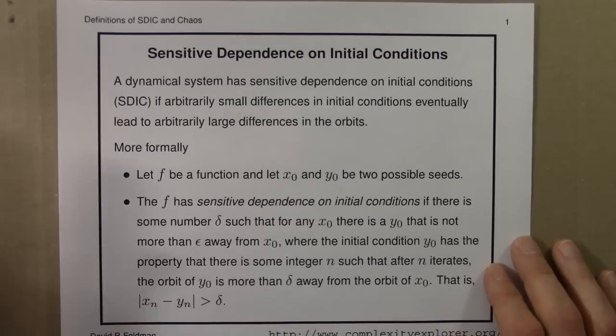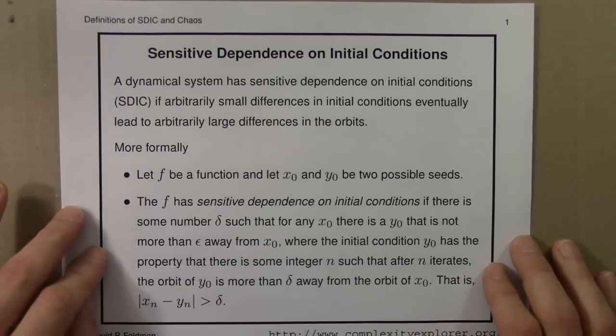Here's the formal definition. I'll state this, and then try to translate this into something a little bit more understandable. We have a function f, or more generally a dynamical system, and let x₀ and y₀ be two possible seeds, two different initial conditions. We would say that this dynamical system, or function, has sensitive dependence on initial conditions if the following conditions are met.